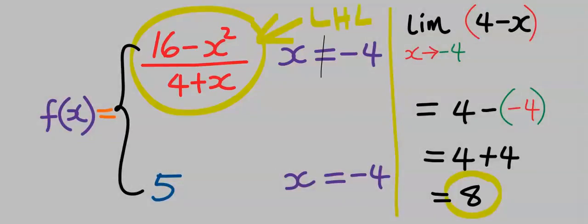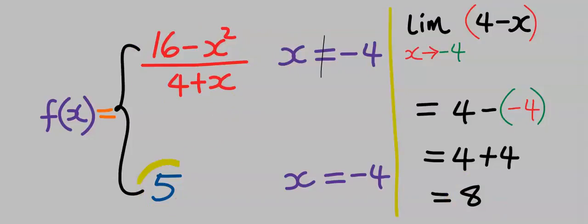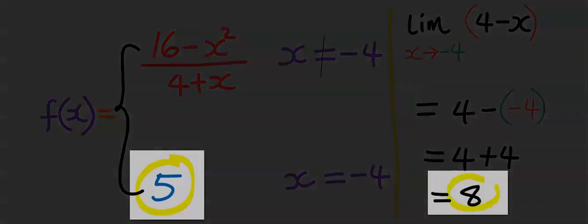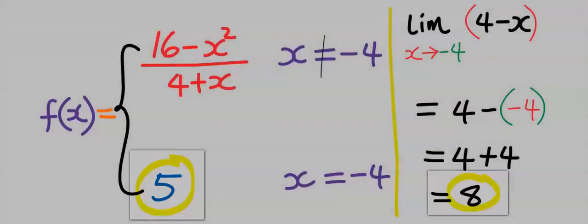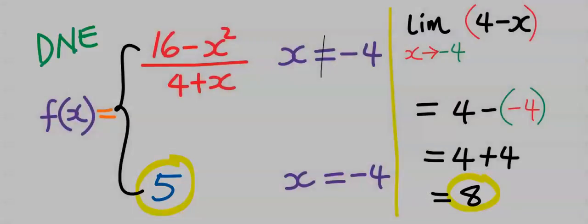However, we are given 5 for the right-hand limit. And since 5 and 8 are not the same, we conclude that this limit does not exist.